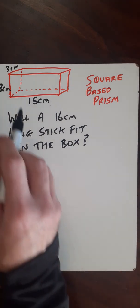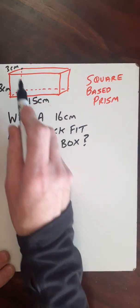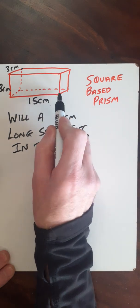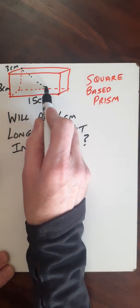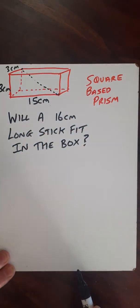So how to do that - I want to go from one corner, let's pick this corner, to the opposite corner on the opposite side. We can calculate that length and see if it is either less than 16 or greater than 16.